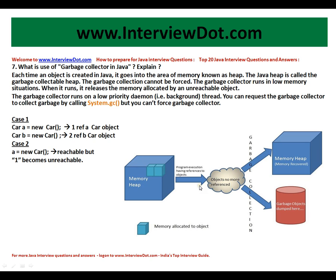In this picture you can see the memory heap. Whenever you allocate an object — whenever you say new Car, or Truck, or whatever object you want to create — memory will be allocated. And when you set it to null or assign a new object to that reference, it will be removed from the heap so that the memory can be used by other object allocations.